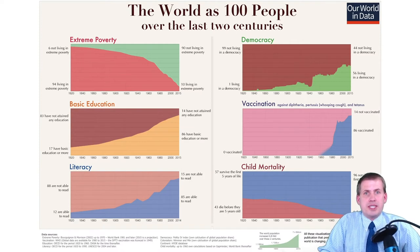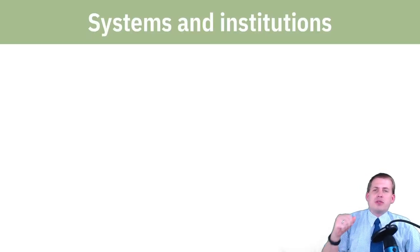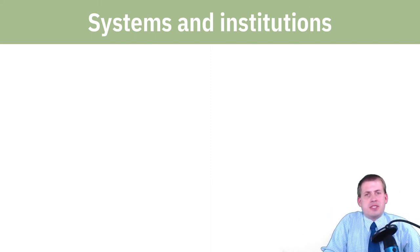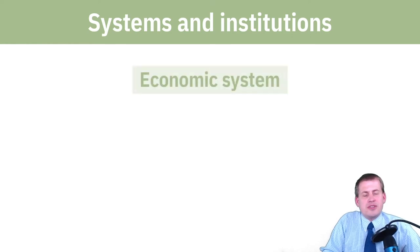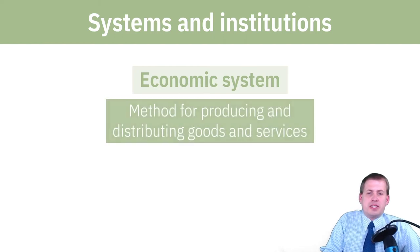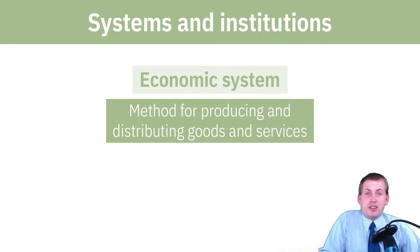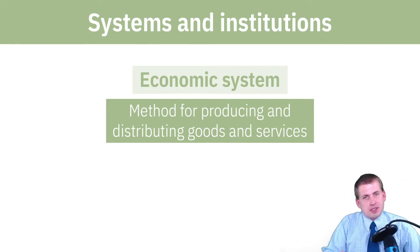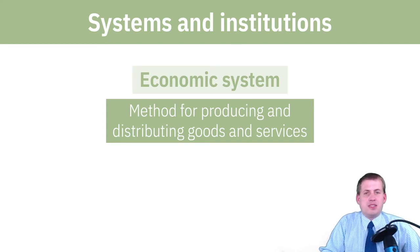Some key vocabulary terms to pay attention to throughout the semester: the first is economic systems. An economic system is a method for producing stuff and distributing stuff. Capitalism is one economic system, but it's not the only one. There are other systems for ensuring that people produce goods or services and then those get distributed to people.